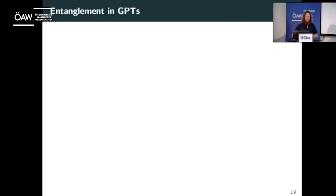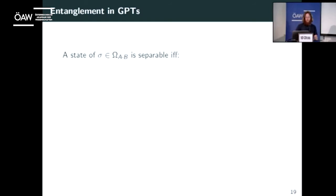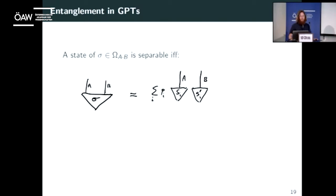Before we can answer that, I should tell you what entanglement in GPTs means. We say that a state σ in some bipartite state space Ω_AB is separable if and only if it can be decomposed as a convex combination of product states. This is a straightforward generalization of the definition in quantum theory — and if it's not separable, it's entangled.